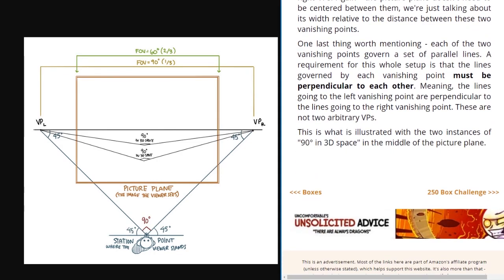One last thing worth mentioning, each of the two vanishing points govern a set of parallel lines. A requirement for this whole setup is that the lines governed by each vanishing point must be perpendicular to each other. Meaning, the lines go to the left vanishing point are perpendicular to the lines going to the right vanishing point. These are not two arbitrary vanishing points. This is what is illustrated with the two instances of 90 degrees in 3D space in the middle of the picture plane.